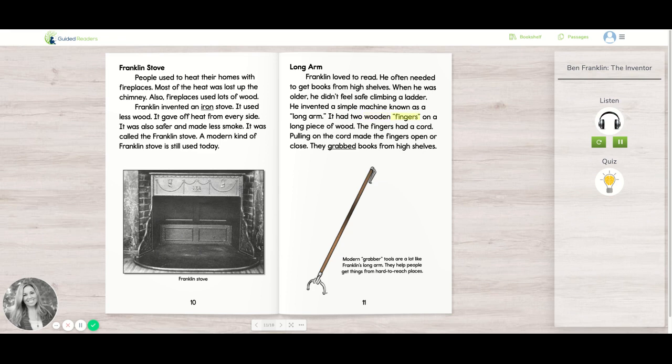It had two wooden fingers on a long piece of wood. The fingers had a cord. Pulling on the cord made the fingers open or close. They grabbed books from high shelves. Modern grabber tools are a lot like Franklin's long arm. They help people get things from hard-to-reach places.